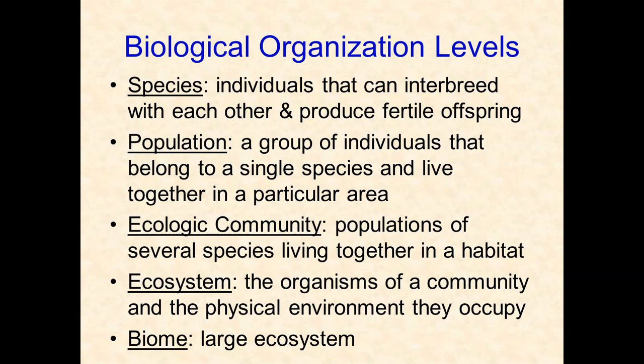The first three organizational levels — species, population, and community — deal with the biotic, or living, portion of an ecosystem. An ecosystem includes all the living organisms in a community (the biotic portion) plus all the non-living ingredients (the abiotic portion) — rocks, soil, climate, everything. A biome is simply a large ecosystem. We will spend the rest of this topic discussing the different biomes found across the globe.